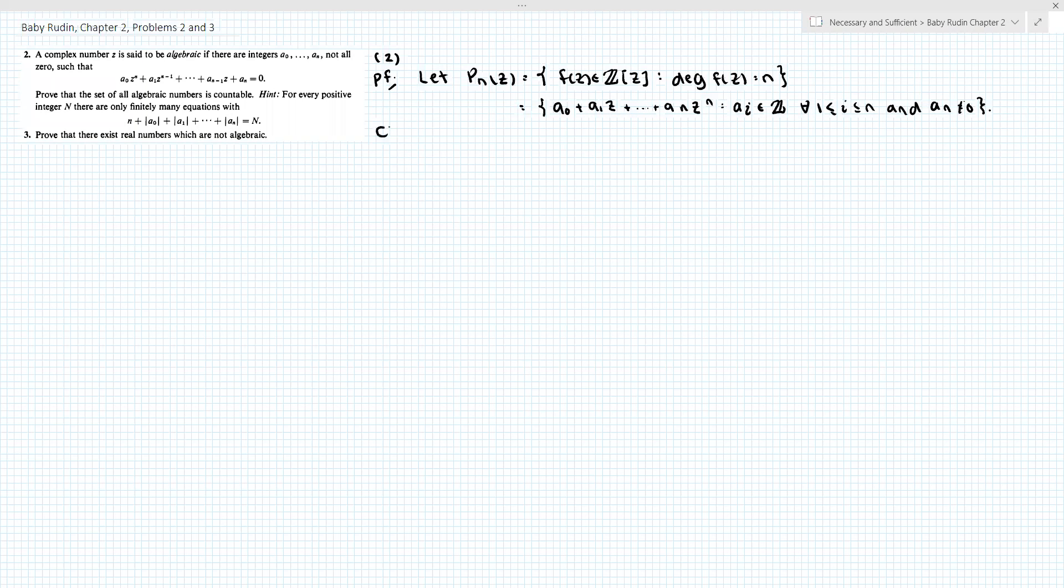Alright, so our claim is that P_n of z is countable. So the way we're going to do this is we're going to show that we can find an injection from P sub n of z into a countably infinite set. Proof of claim.